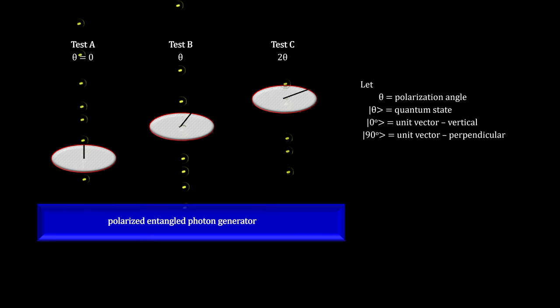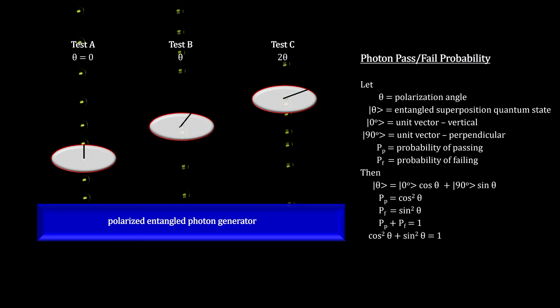So we'll use quantum entangled photons along with the assumption that interacting with one of them does not change the state of the other. So all tests start out with vertically polarized entangled photons. The thought experiment used tests in three particular combinations. One was to run a photon through test A, followed by running its entangled photon through test B. The second was to run a photon through test B, followed by running its entangled photon through test C. And the third was to run a photon through test A, followed by running its entangled photon through test C.